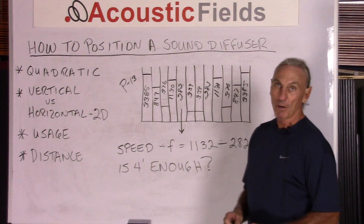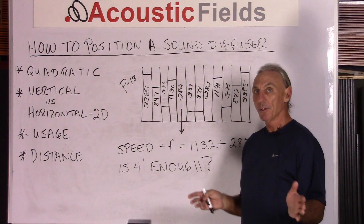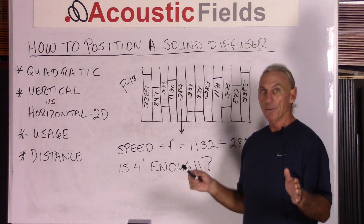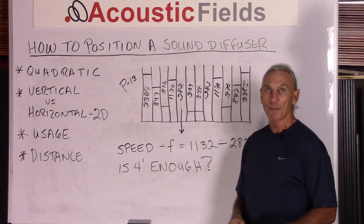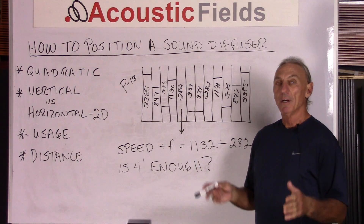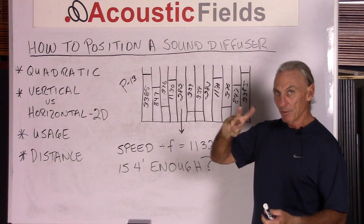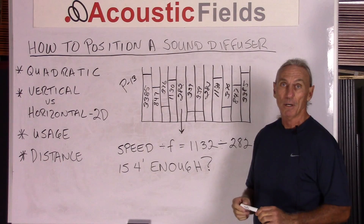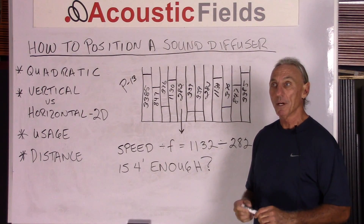Let's stay with quadratic, because with quadratic we have vertical and horizontal diffusion capabilities. If the diffuser is vertically placed, we know that it diffuses sound horizontally — there's an inverse relationship there. If it's horizontally placed, we know it diffuses vertically. So we have two out of three possible dimensions of sound within our room. It's a pretty powerful tool if you think about it.